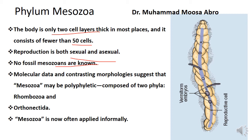Molecular data suggests that Mesozoa may be a polyphyletic group, composed of many other phyletic lineages. There are two formal phyla: Rhombozoa and Orthonectida. Mesozoa is therefore considered an informal name, while the technical phyla are Rhombozoa and Orthonectida.